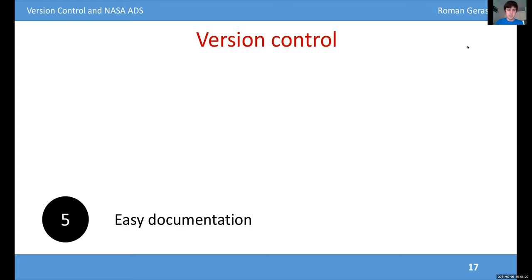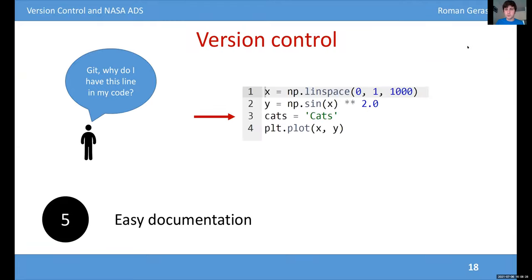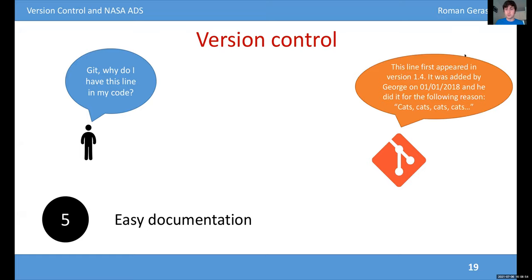I sorted these in order of decreasing priority, starting with the least important reason: documentation. Because you have every single version, you can track down where different changes in your code came from. If you look at your code and see a weird line you don't understand, normally there's no way to figure out where that line came from, especially if it was added by somebody else many years ago. But with a version control system, you just say 'Git, why do I have this line of code?' and Git can search through the entire repository to tell you when that line was added, what version it was in, who added it, and can provide a justification for why it's there. This feature is called Git Blame — reason number five.